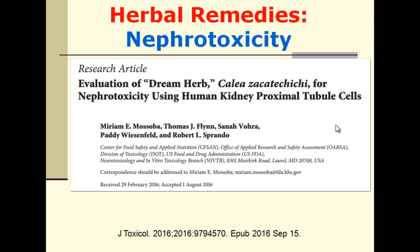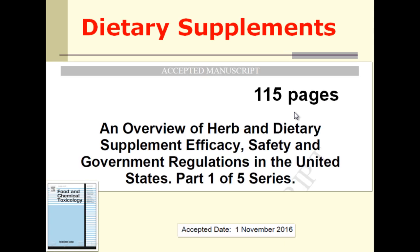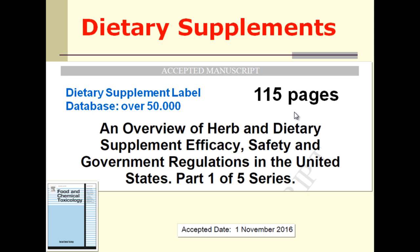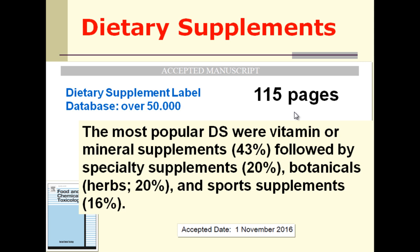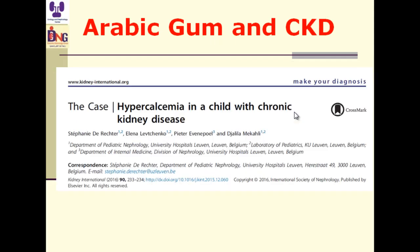Dietary supplements in the United States: the dietary supplement label database includes over 50,000 products — 40% vitamins or minerals, 20% specialty items, 20% botanical herbs, and 16% sports supplements. An overview of herbs and dietary supplements regarding efficacy, safety, and government regulation in the United States spans 115 pages. It is important to be aware of the contents and potential harms of these supplements.